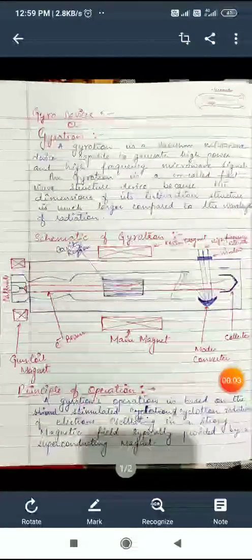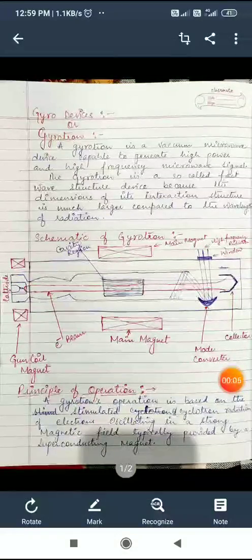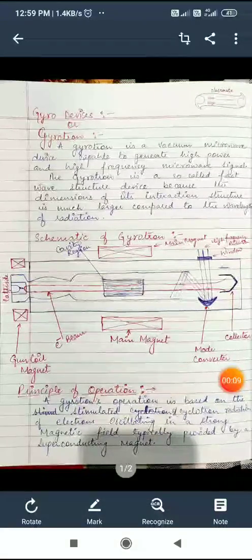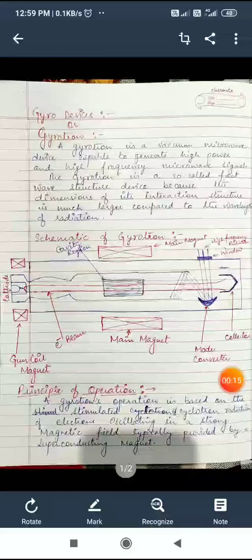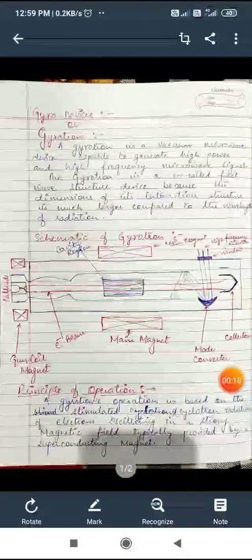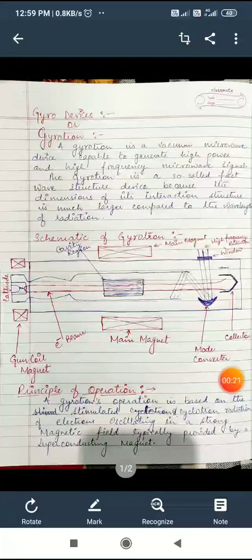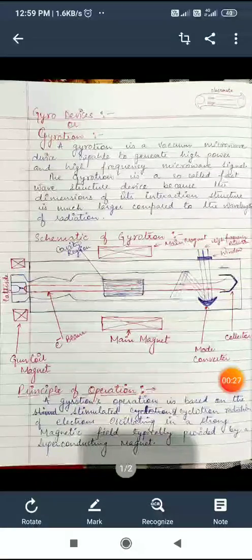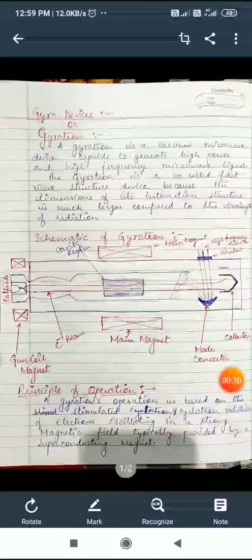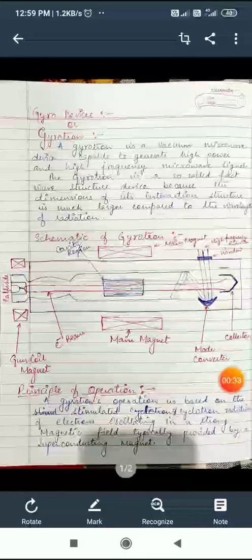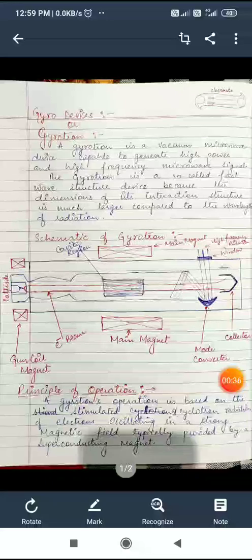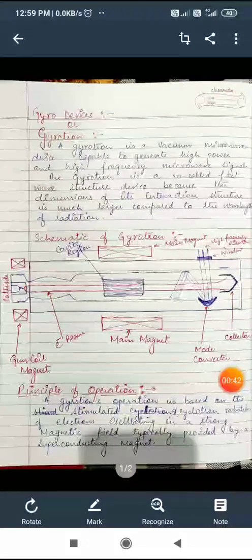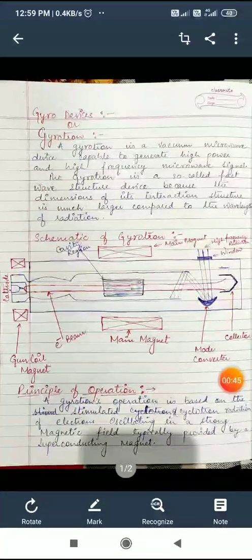Hello students, today's topic is gyrotron. Basically, gyrotron is a microwave device which is capable of generating high frequency microwave signal. Gyrotron is a microwave vacuum tube device, meaning this gyrotron is enclosed in a glass tube capable of generating high power microwave signal as well as high frequency microwave signal. The gyrotron is also called fast wave structure.